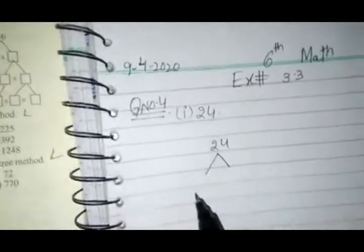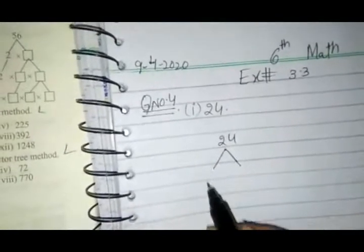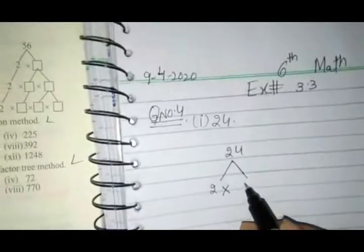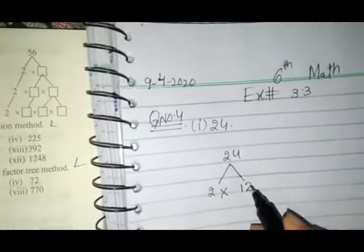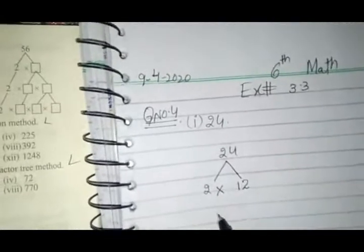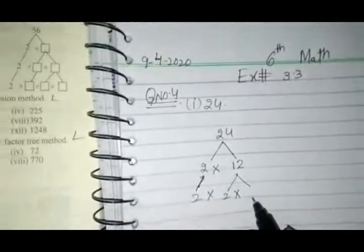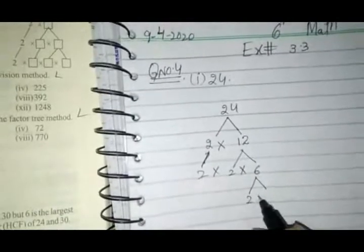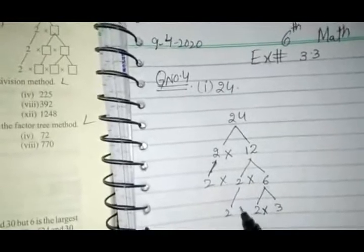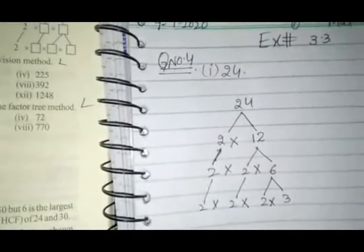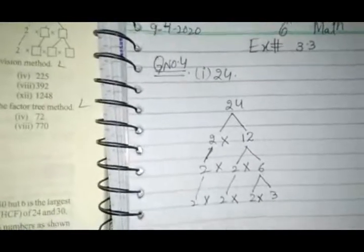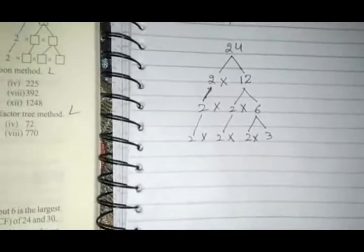We have to find the prime factors of 24 by using the factor tree method. We start with the smallest prime number, that is 2. So the prime factors become 2 × 2 × 2 × 3. That is the answer of the question.